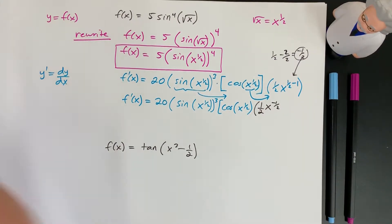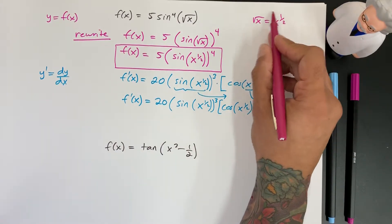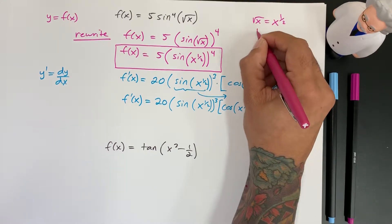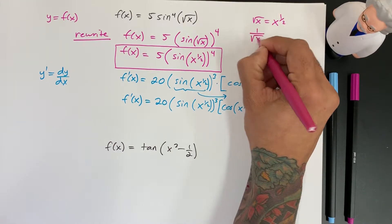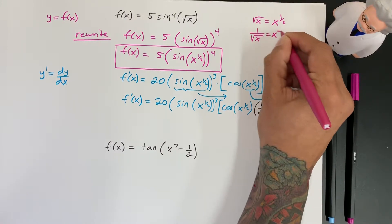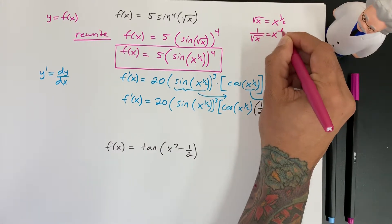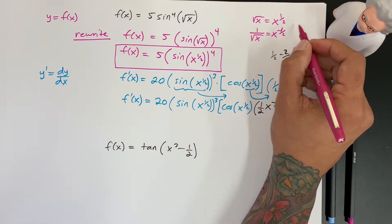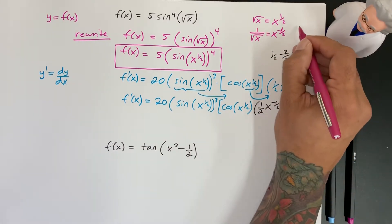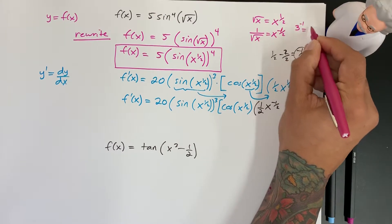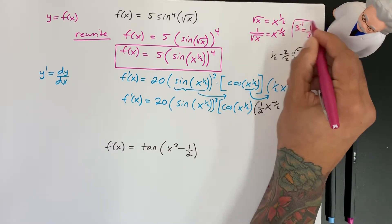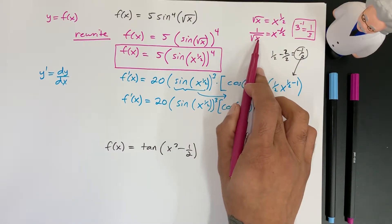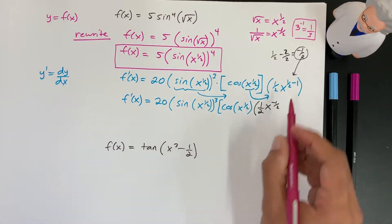And so just how we used this here to understand what x to the 1/2 was, now we can understand that 1 over the square root of x is x to the negative 1/2. So any number that's raised to the negative goes underneath. So let's say you have a 3 to the negative 1, that's 1 over 3. So x to the negative 1/2 is just the square root of x but on the bottom, and so that's what we have here.